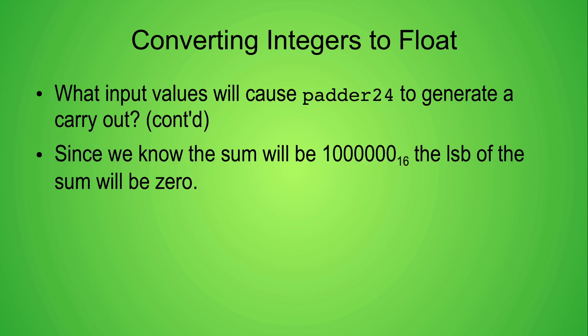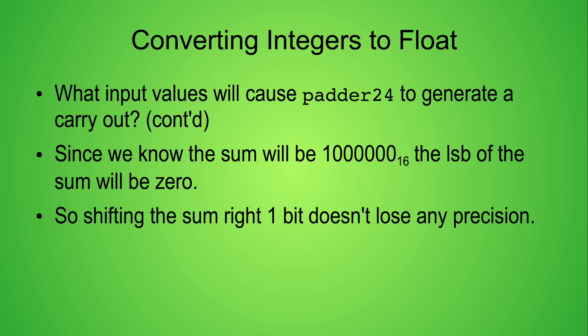Since we know that the sum will be hexadecimal 1 followed by six zeros, the least significant bit of the sum must be 0. So shifting the sum right by one bit doesn't cause a loss of precision.